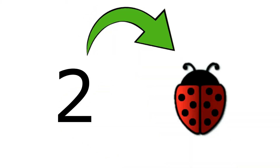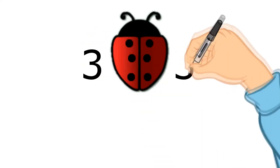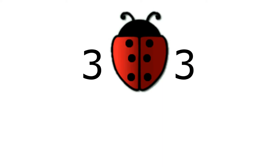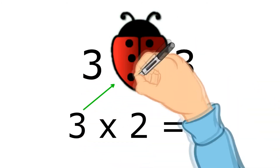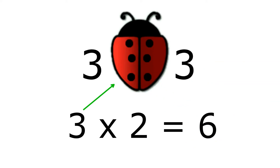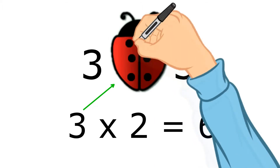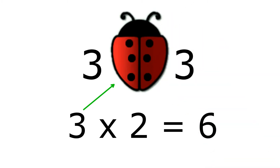If you saw this ladybug and it had three spots on one wing, and I'm hiding the other wing — how many spots are going to be on the other wing? Three. Good. Now if you imagine the whole ladybug, how many dots would you see in total? Six. There are your six dots. Even if you closed your eyes, you could imagine three dots on one wing and six in total. This is how we use the ladybug to multiply things by two: if you need to do three times two, you think of a ladybug with three spots on one wing and three on the other.